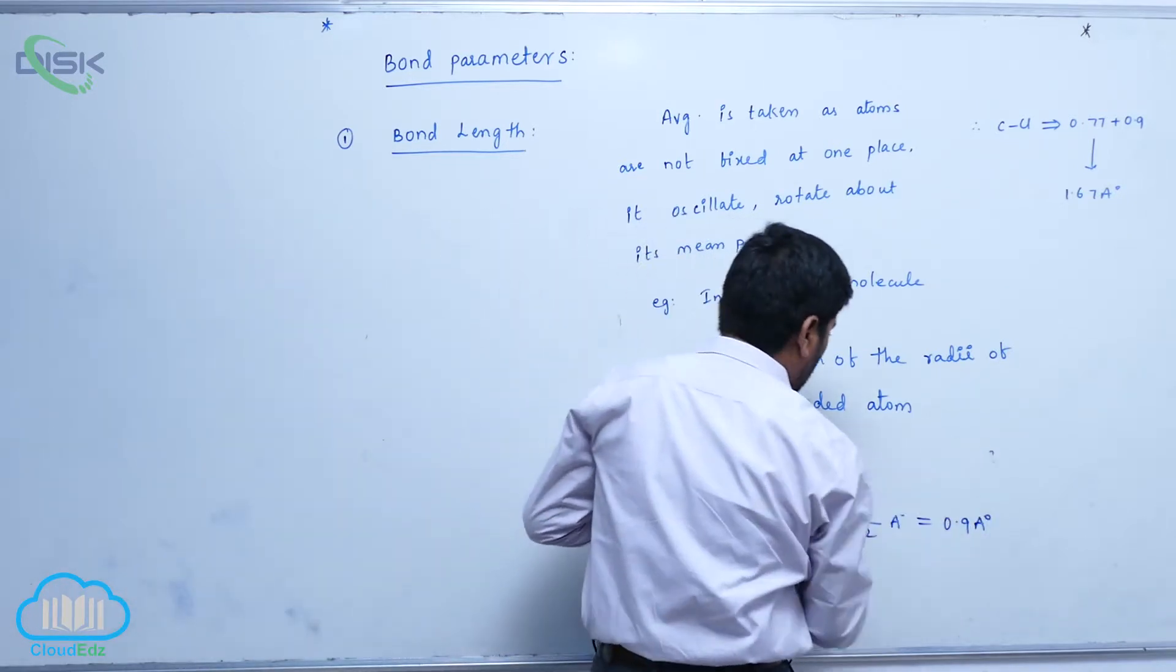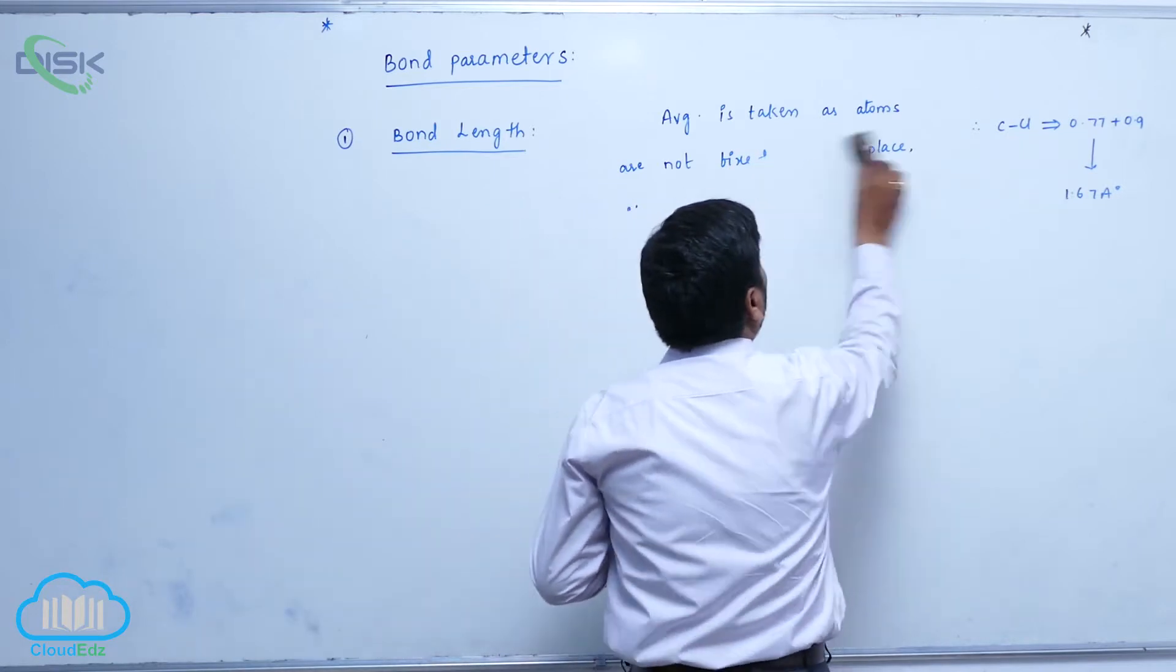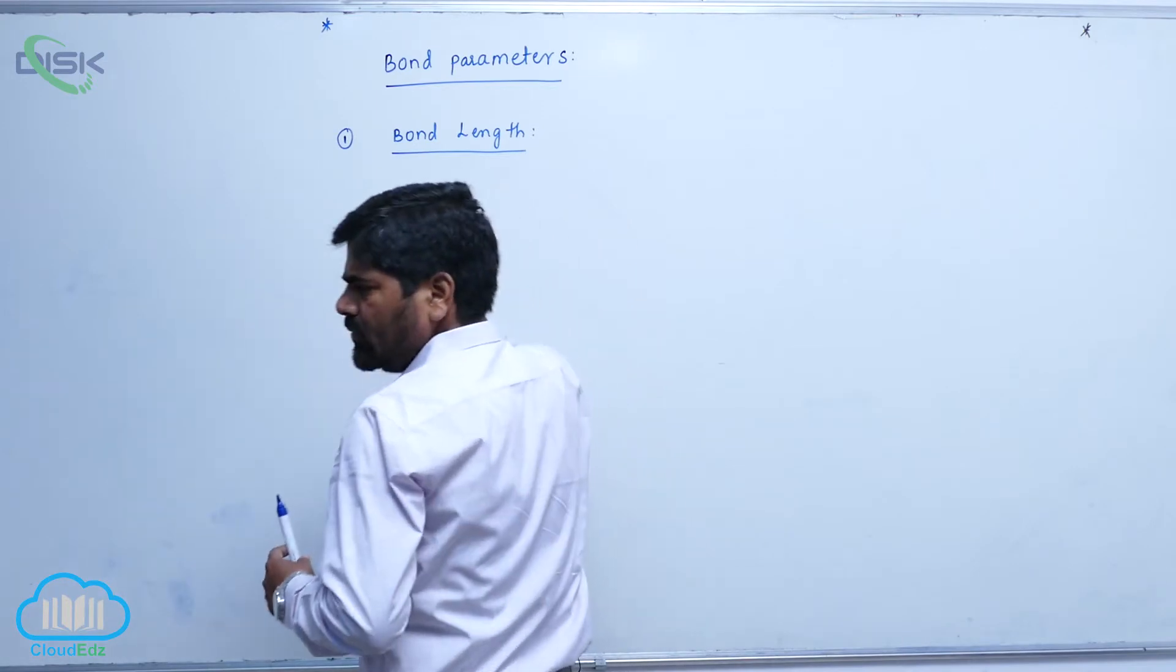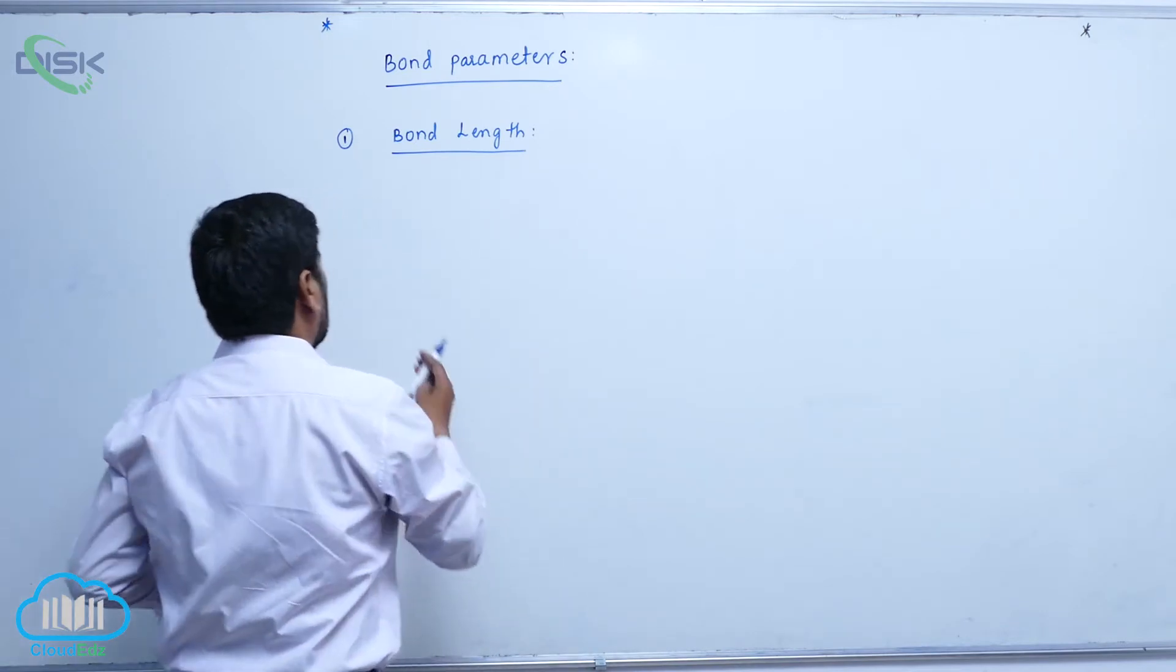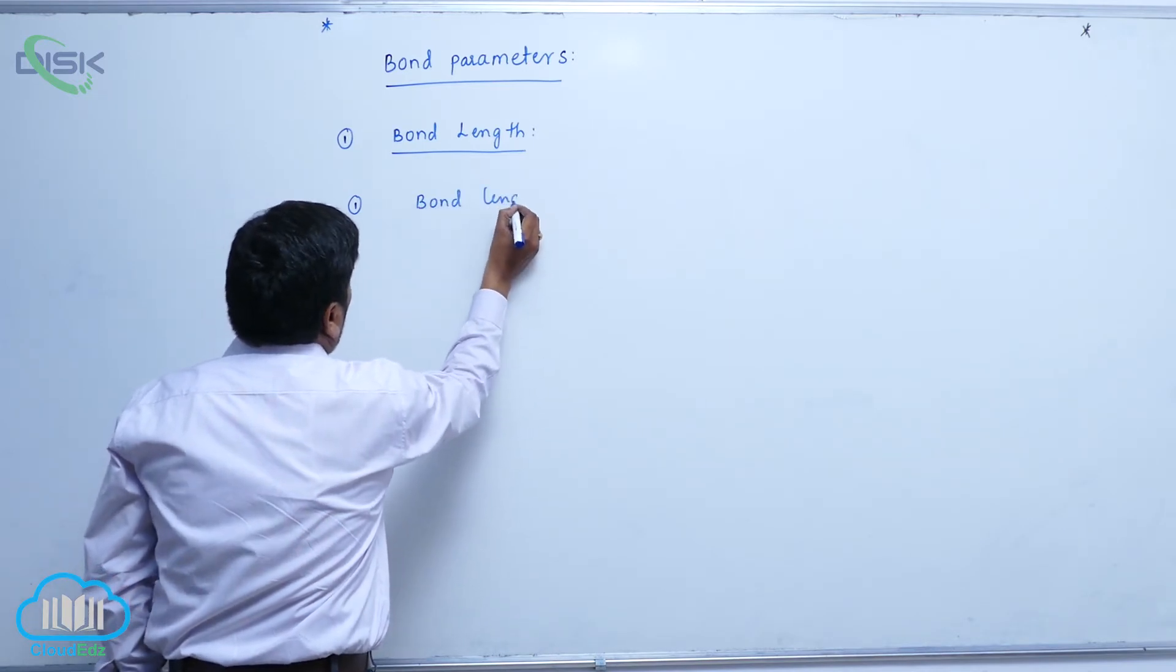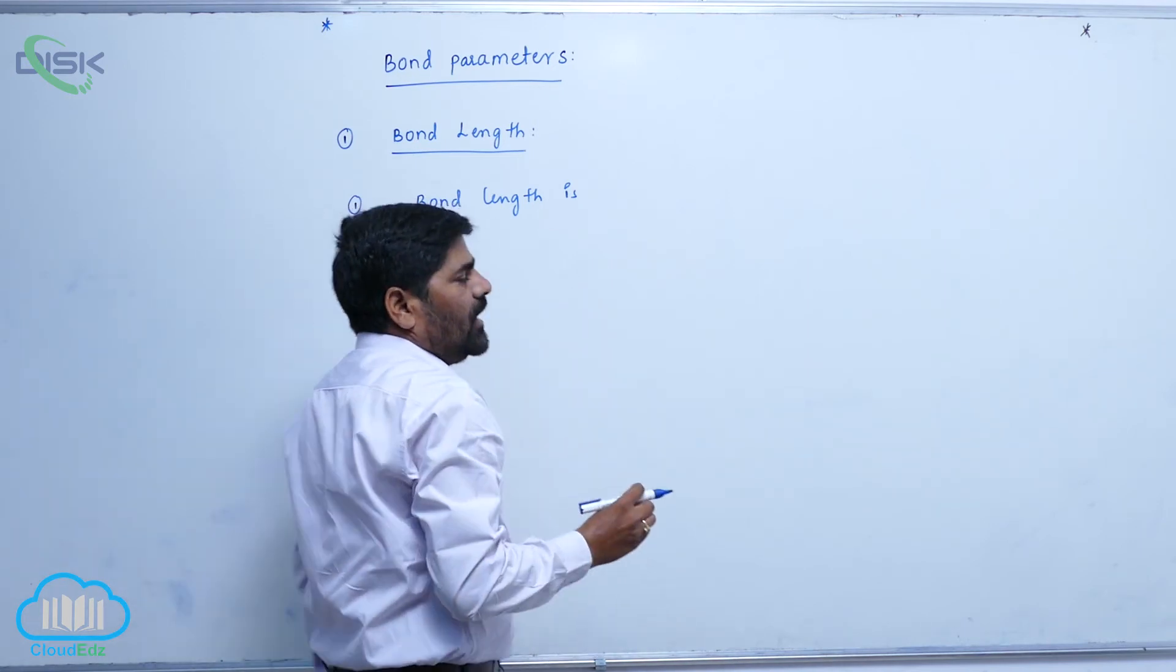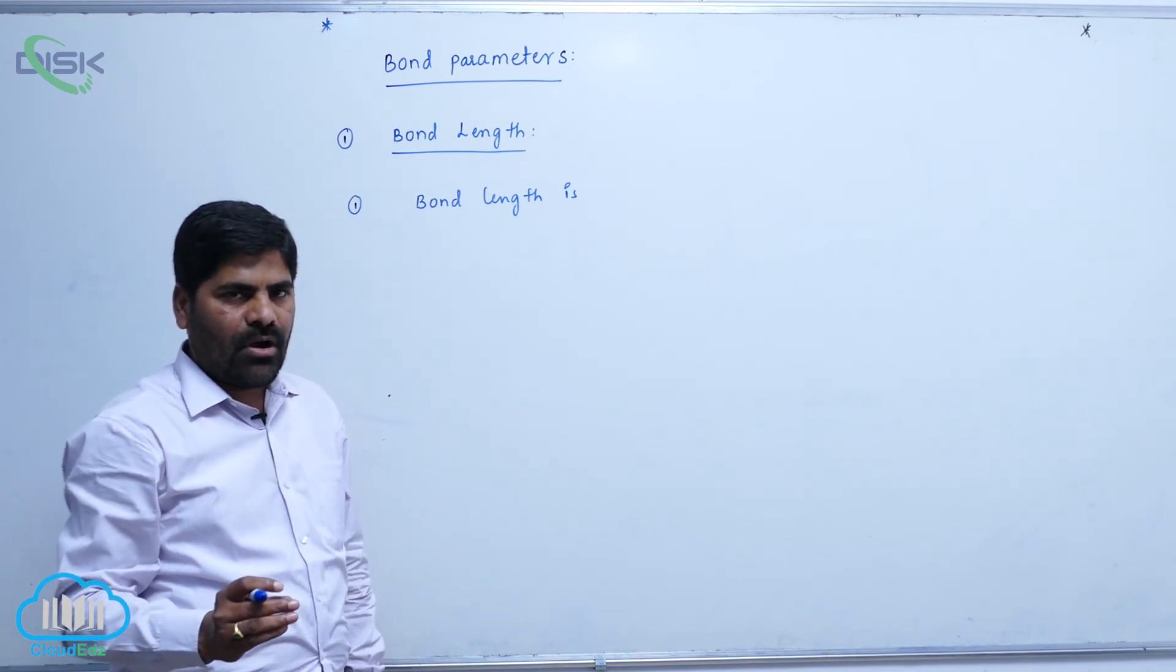Factors of bond length. Number one is bond length is independent of physical state of compound.